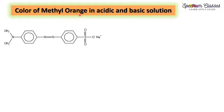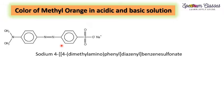Methyl orange is used as an internal indicator in acid-base titrations. The chemical formula for methyl orange is given here and its IUPAC name is sodium 4-(4-dimethylaminophenyl)diazenyl benzene sulfonate. It is an azo dye, and this N=N is the azo group.